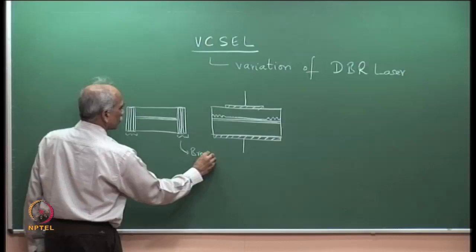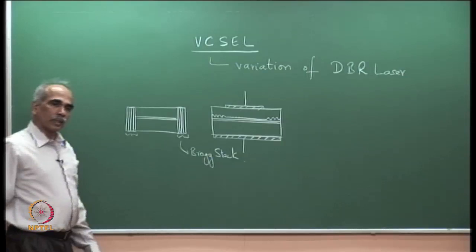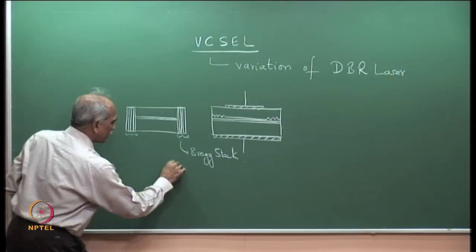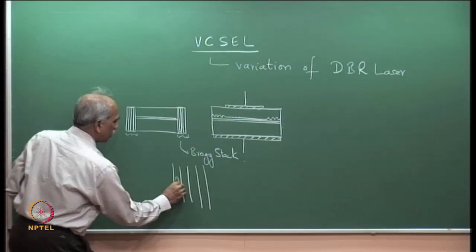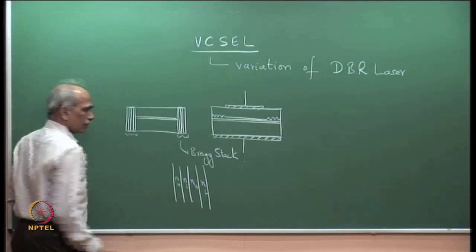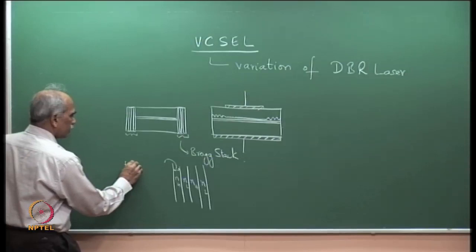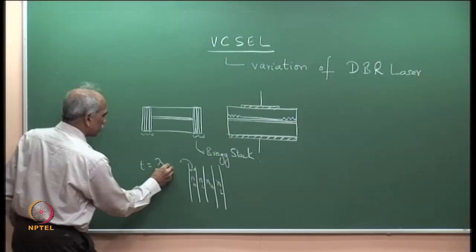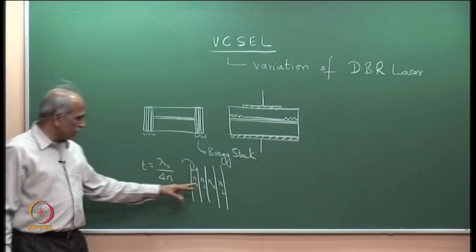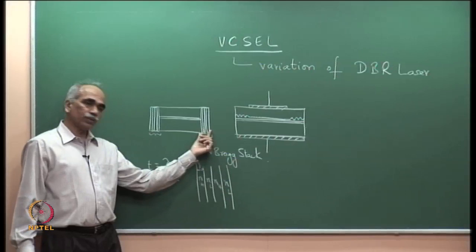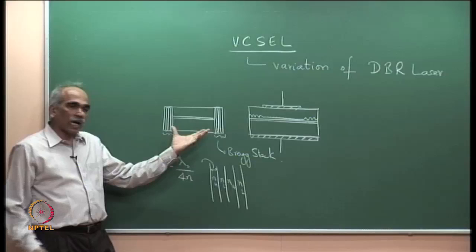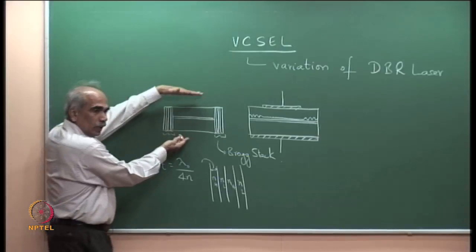The Bragg stack consists of alternating high and low refractive index layers: n_high, n_low, n_high, n_low. The thickness of each layer is t = λ₀ / (4n), where λ is the wavelength you want to select. That forms a reflector for this wavelength λ₀. This is the basic idea from which the DBR structure came.